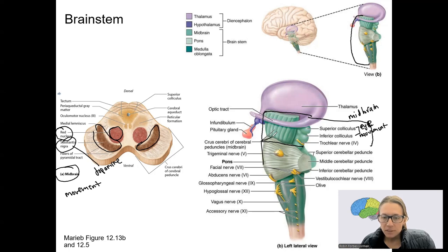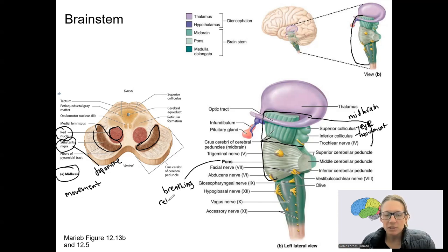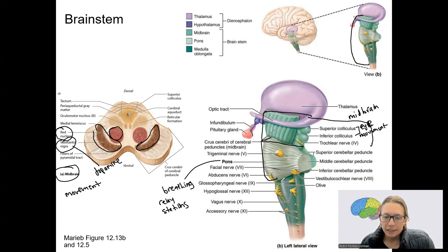The pons — this big pond-shaped structure right here — is largely involved in breathing regulation. We don't have to consciously think about how much we're breathing in and out. The pons also contains relay stations and several cranial nerves.